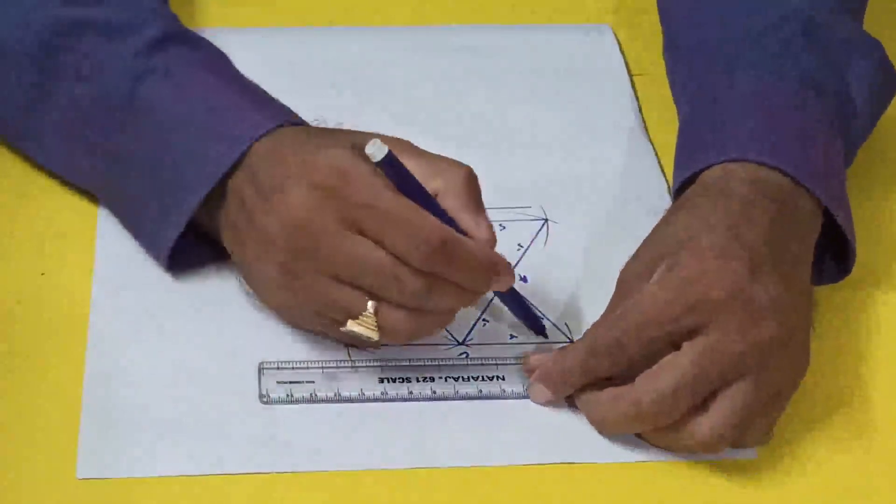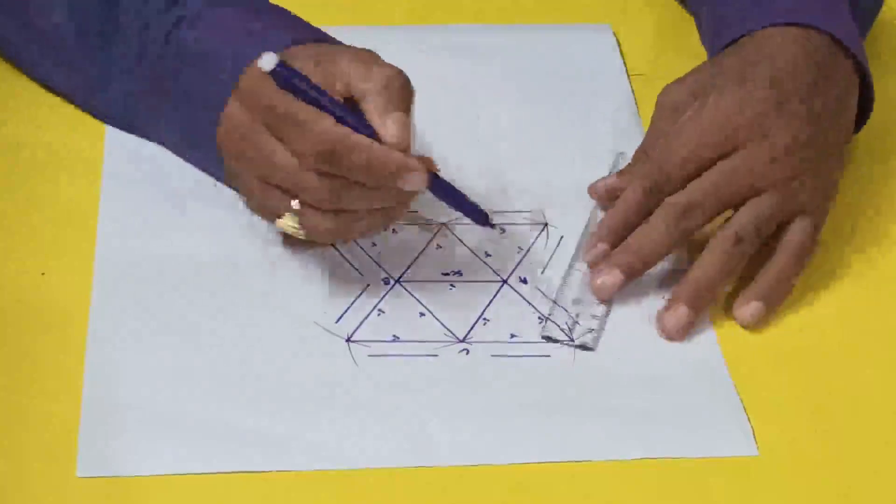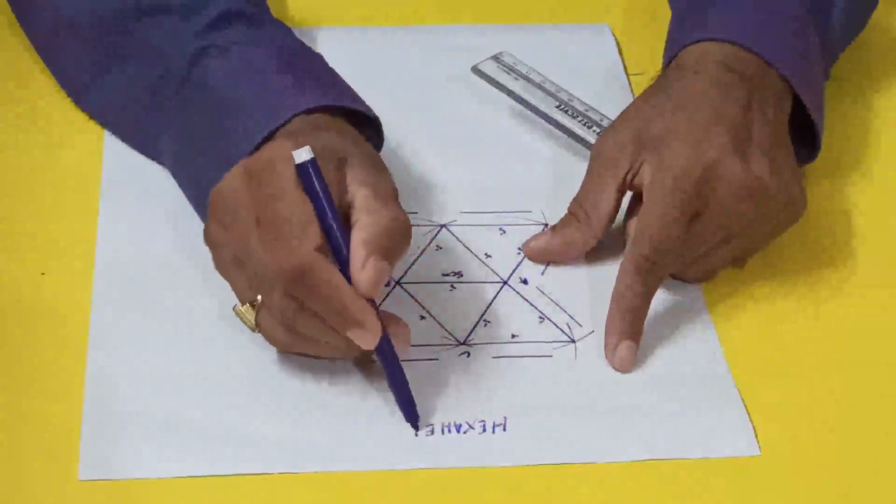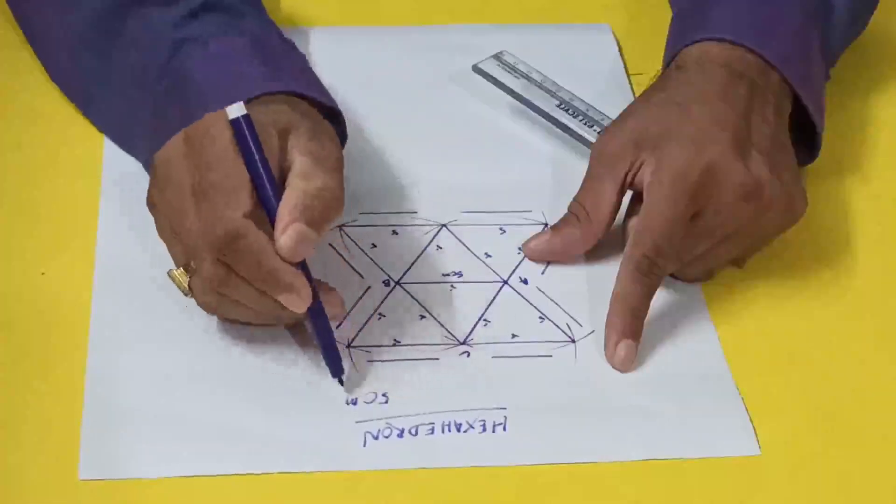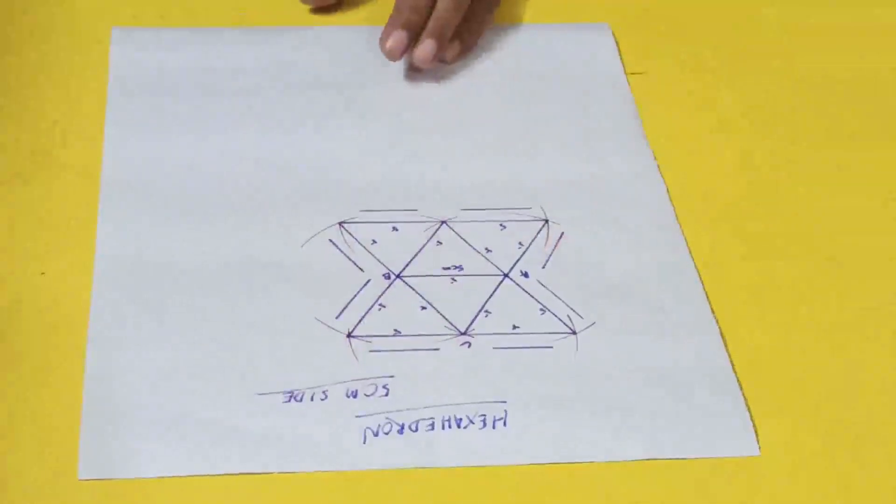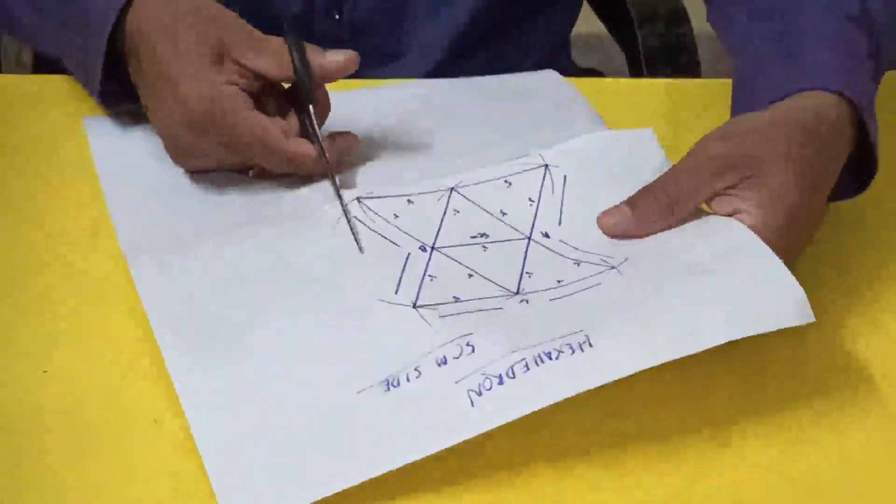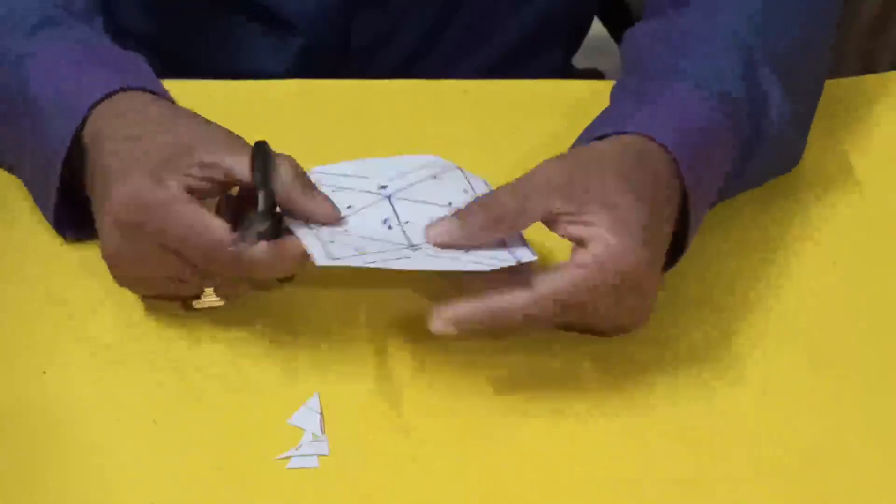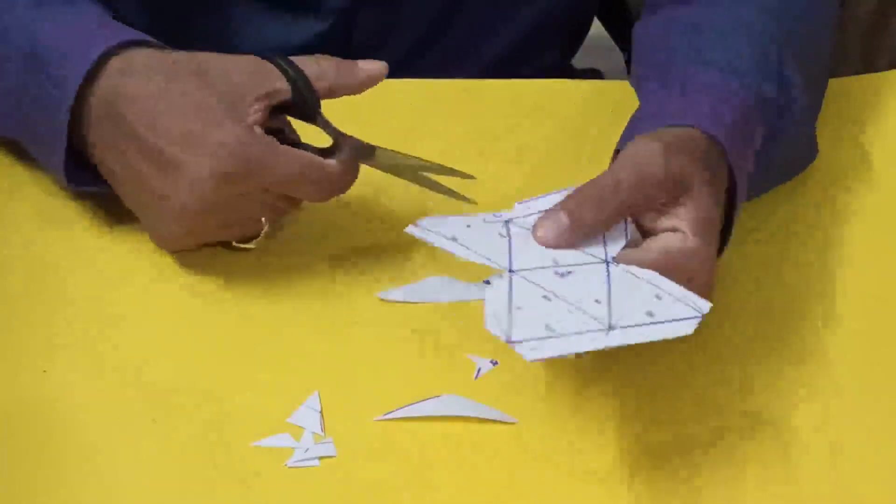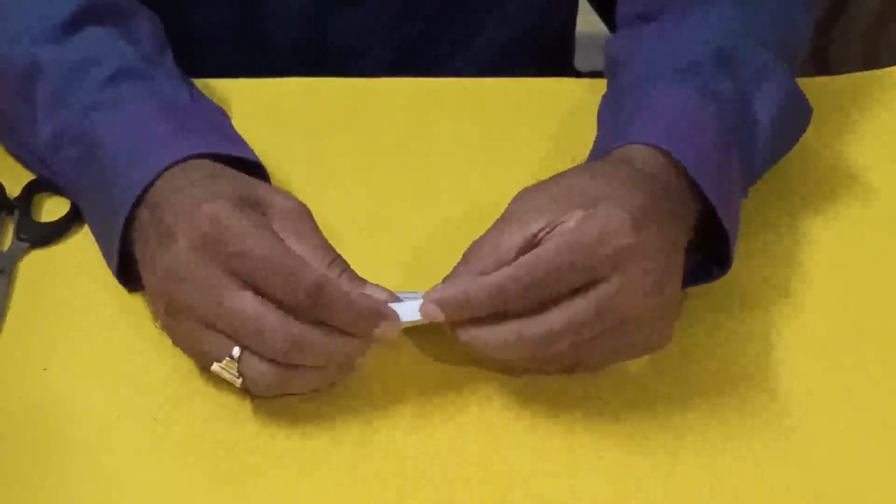We'll remove the extra border. So now I cut this one, hexahedron five centimeter side. Now the net diagram for hexahedron is over. Now fold the border.